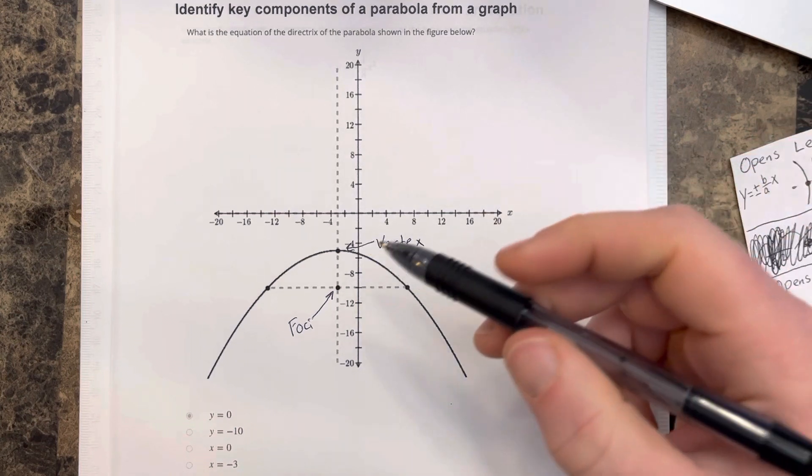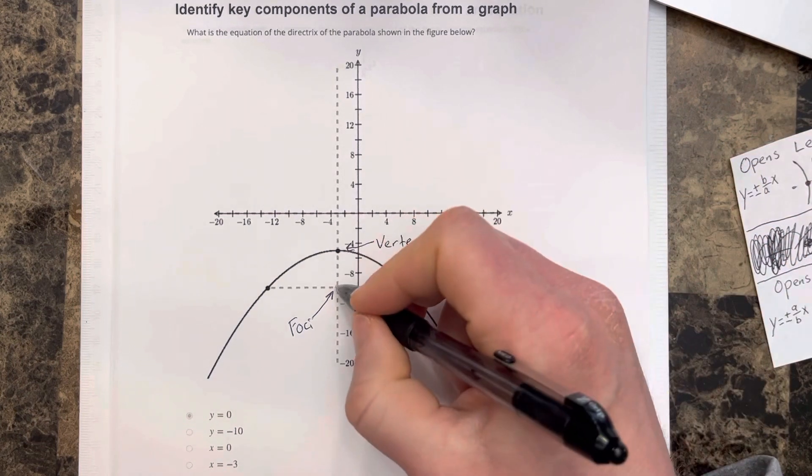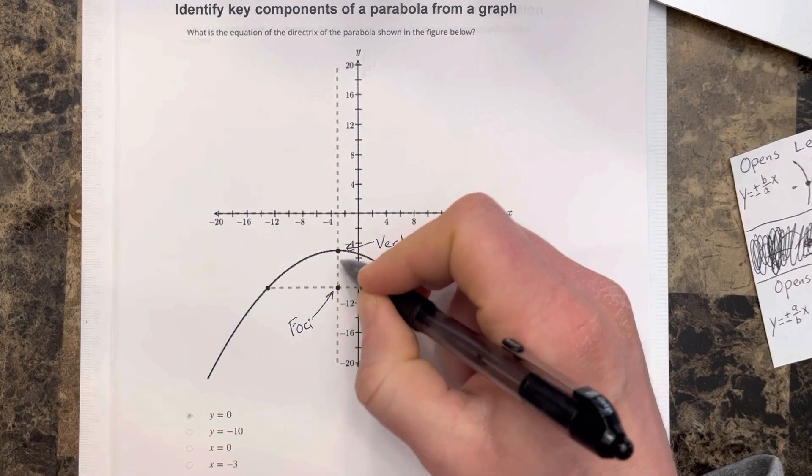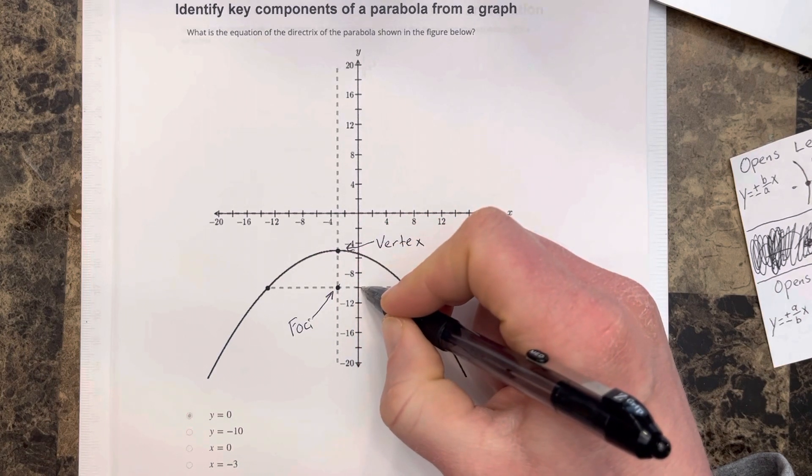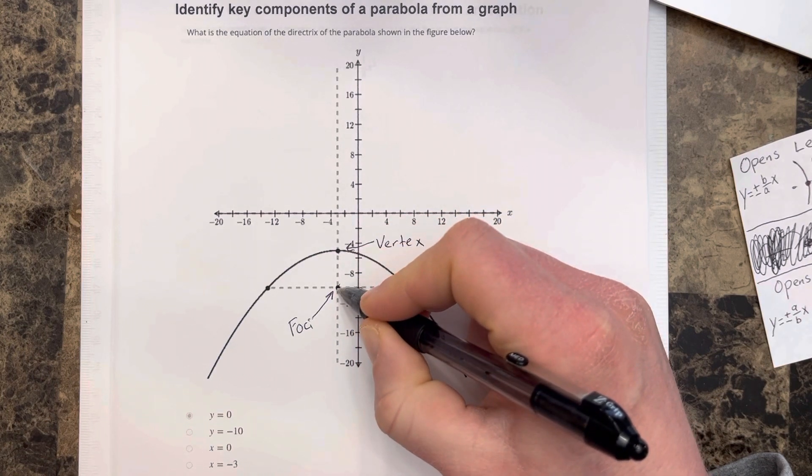We can find the directrix by finding the distance from the foci to the vertex. In our case, the foci is at negative 11 in the y-direction.